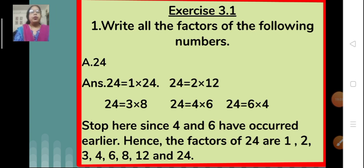Exercise 3.1, question one: write all the factors of the following numbers. First, (a) is 24. What we have to do is write the factors of number 24. How do we do that? We will write the pairs of numbers which when multiplied they will give the product as 24.